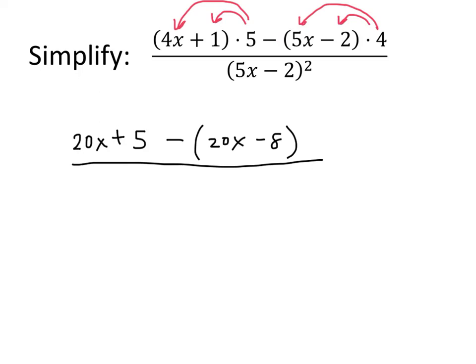On the bottom, I have 5x minus 2 squared. We could argue about whether we should multiply that out or leave it factored, but since the problem just says simplify and isn't more specific than that, let's just go ahead and leave it factored.